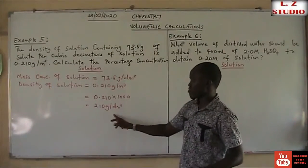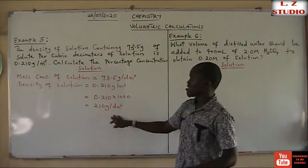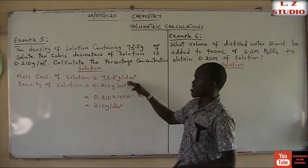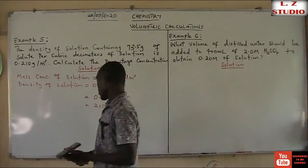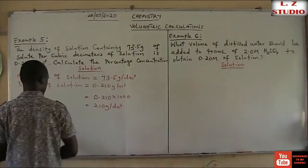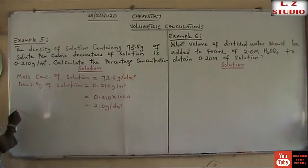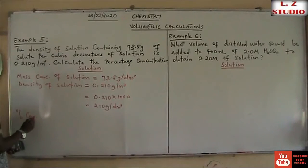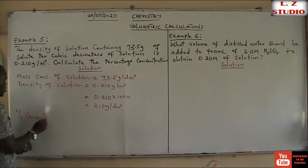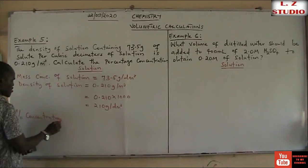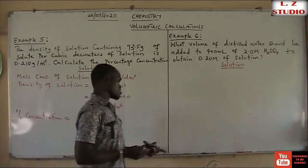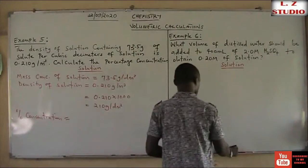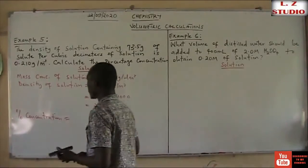The new density we have acquired has the same unit as the mass concentration of the solution. In order to calculate the percentage concentration, percentage concentration is now going to equal the mass concentration of the solution divided by the density of the solution.